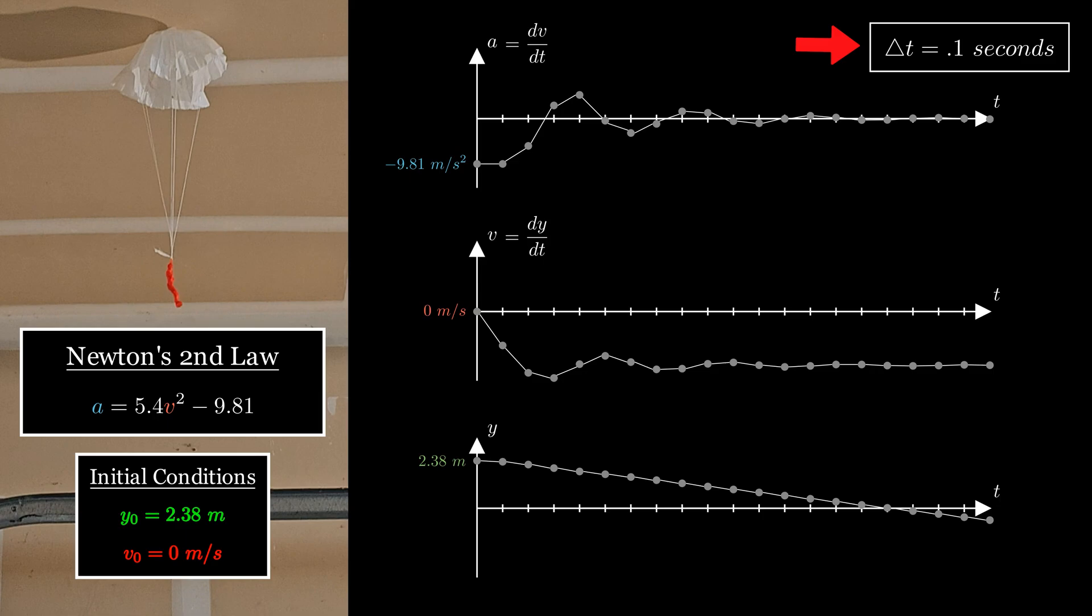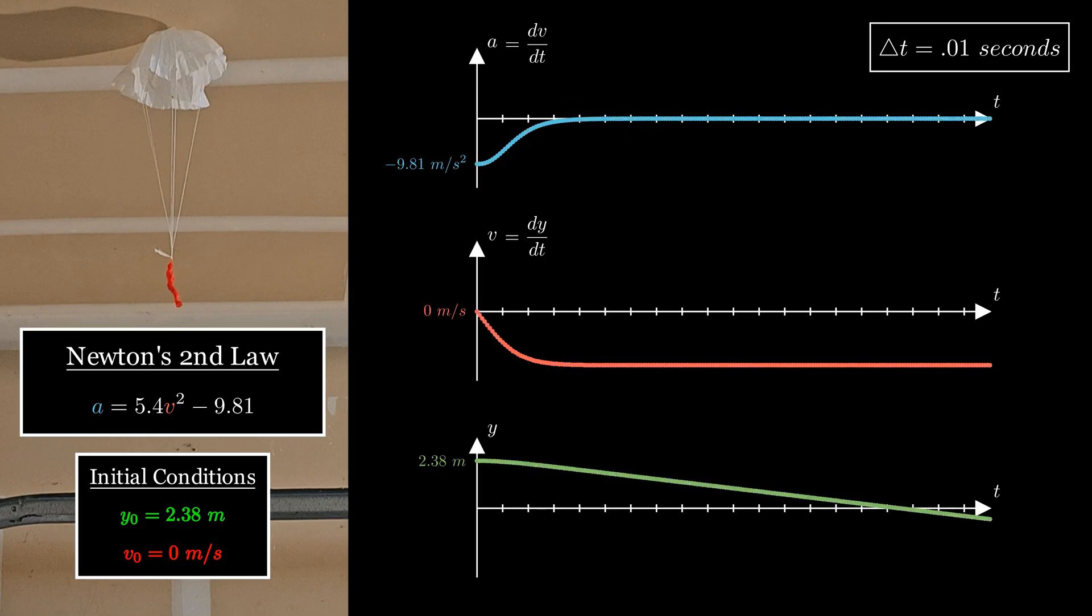If I cut the step size in half from 0.1 seconds to 0.05 seconds, meaning twice as many calculations, I can see that there's less choppiness, but still some. So I'll make the step size an additional 5 times smaller, down to 0.01 seconds, and we start to see each of the graphs converging to a solution. I could decrease it further, but it's not going to change much, and this is good enough.